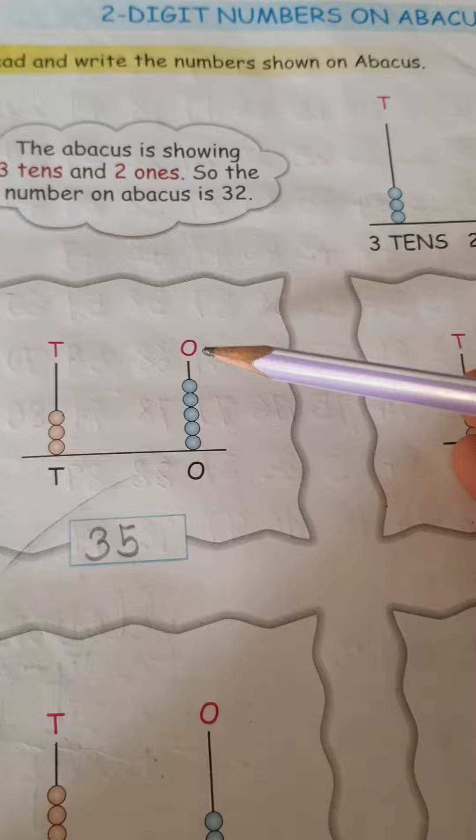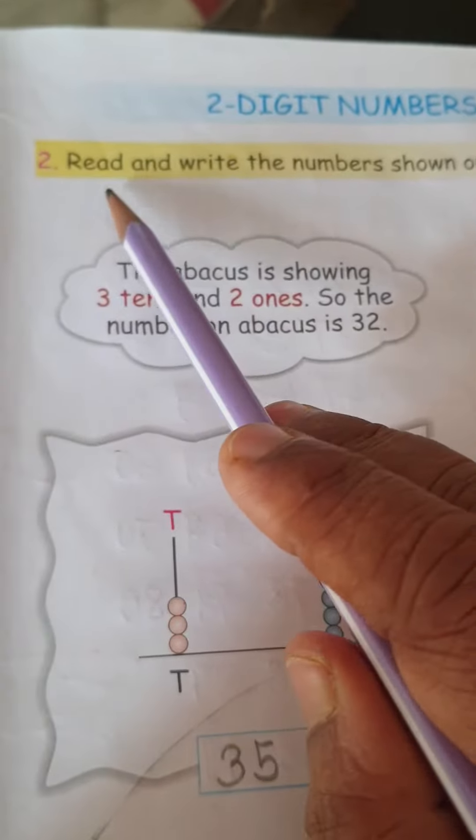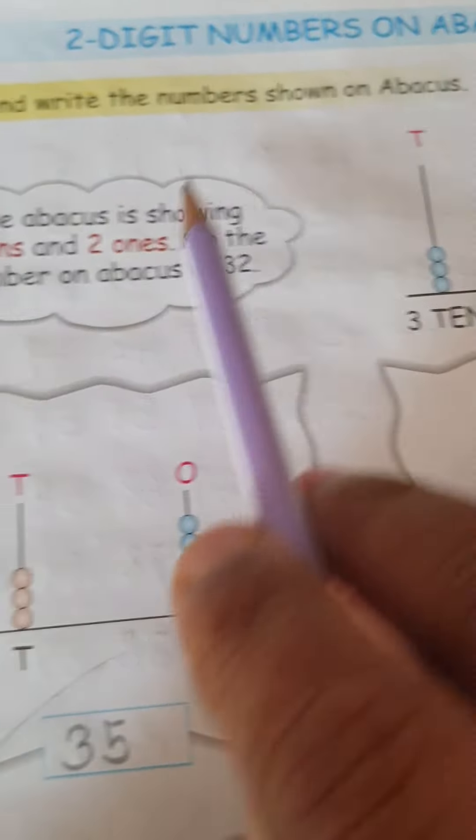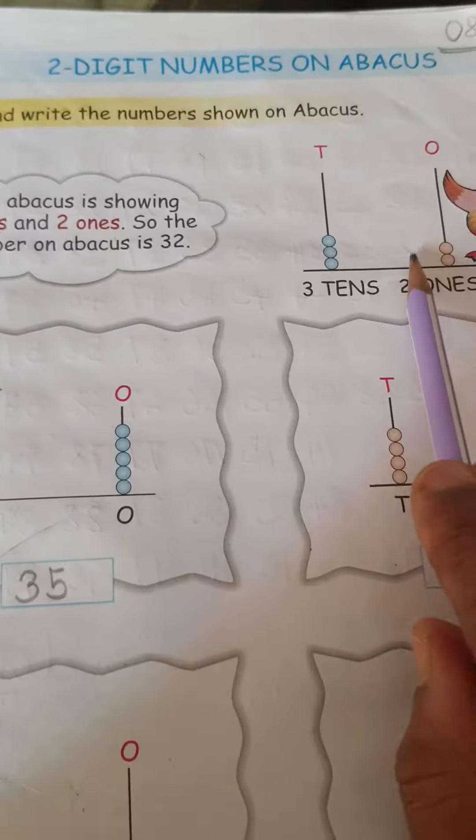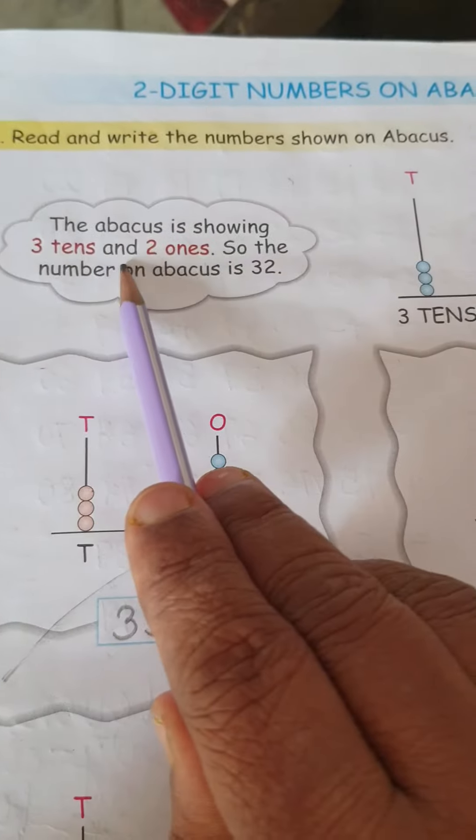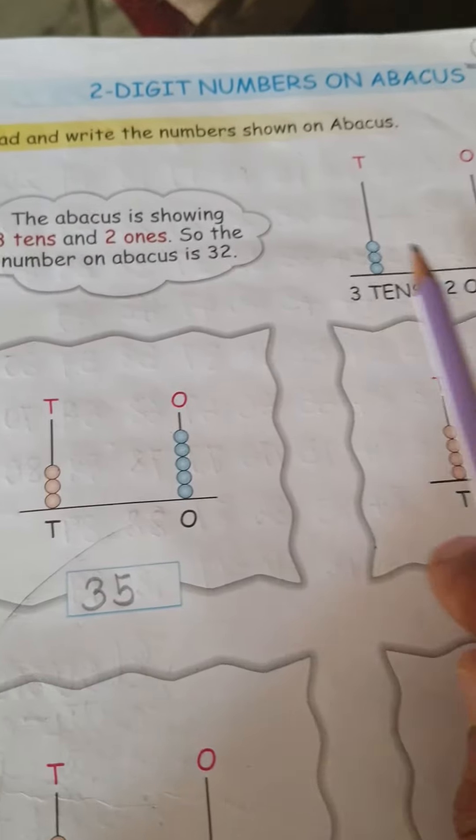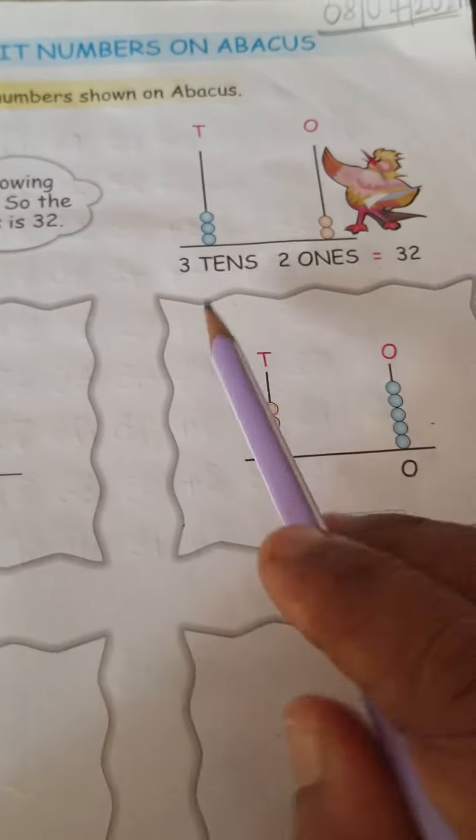These are called abacus. Then read and write the numbers shown in abacus. First, the abacus is showing 3 tens and 2 ones. So the number on abacus is 32.